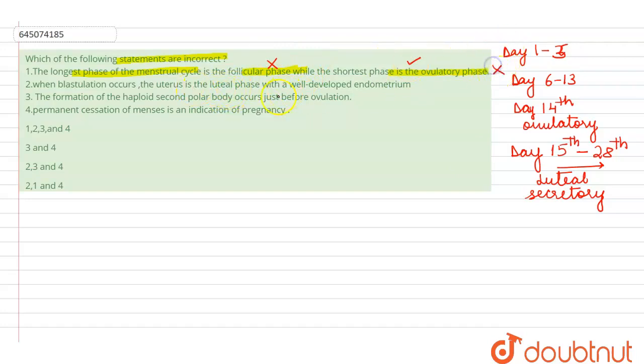The second one is when blastulation occurs, the uterus is in luteal phase with well-developed endometrium. Remember, blastulation is formation of blastula and blastula is formed after the zygote undergoes division. First it is going to undergo division into—so zygote will form first morula, that is 8 to 16 cell stage, which will further increase in size and number and then it is going to differentiate into two layers.